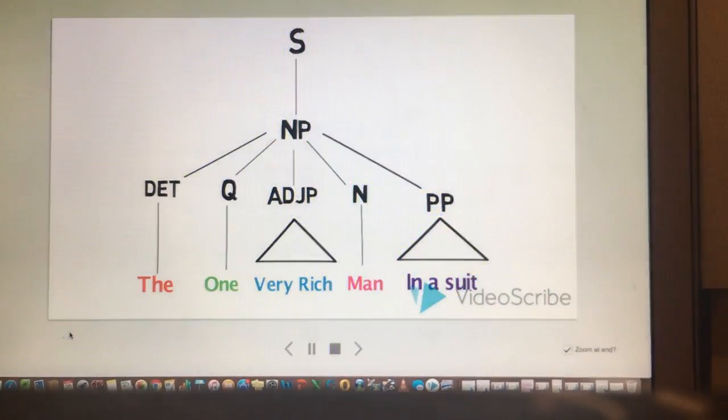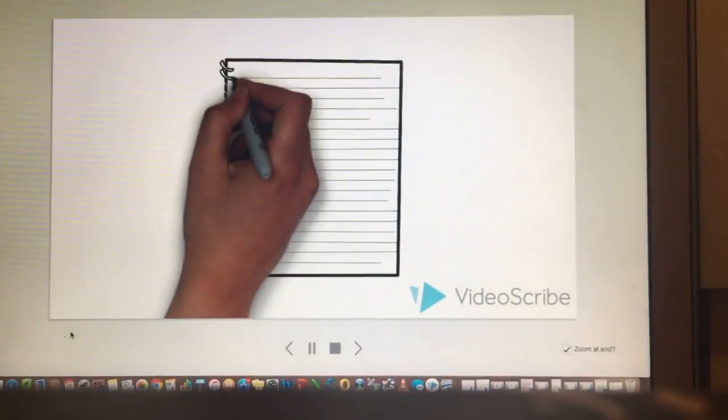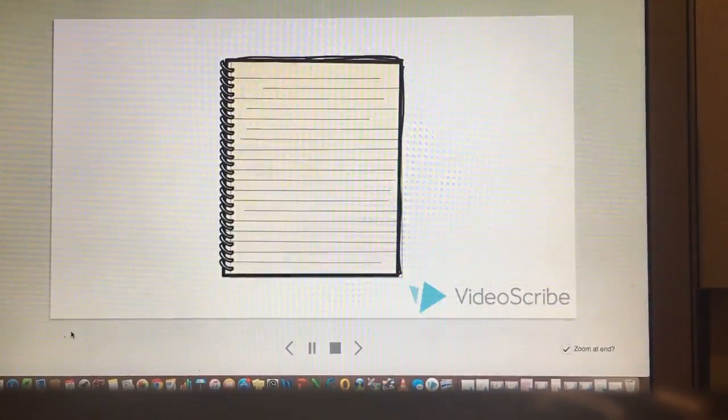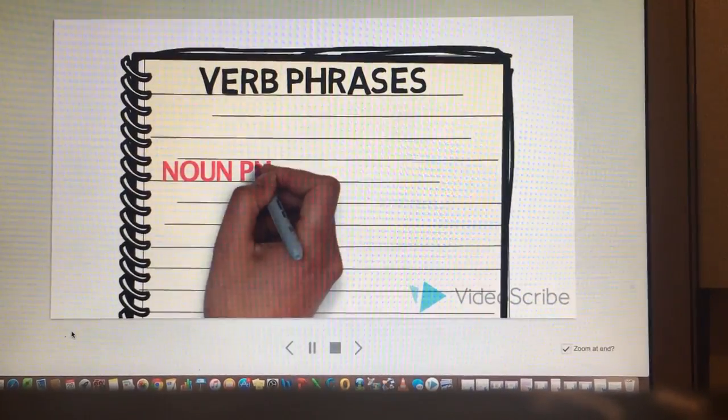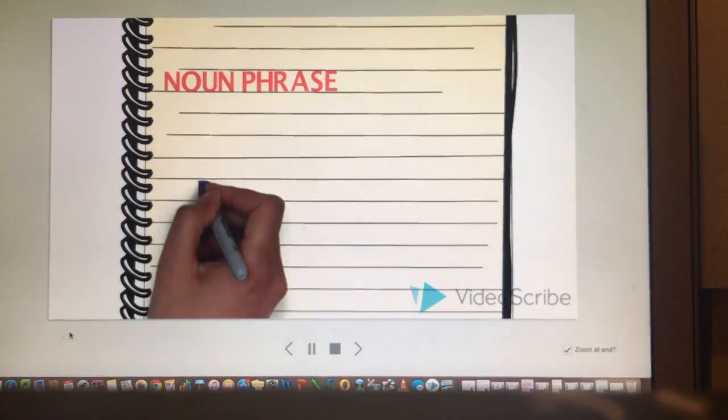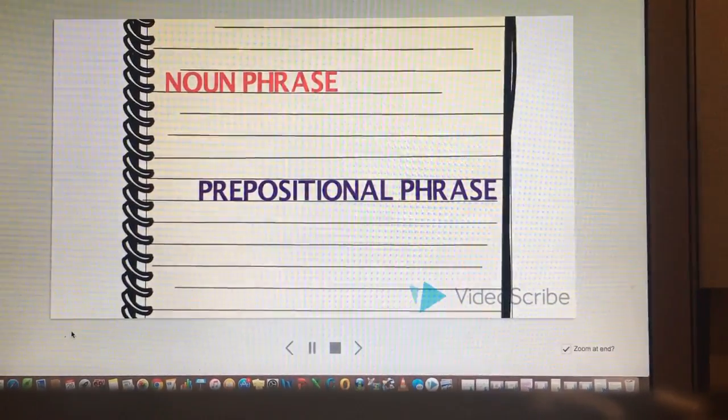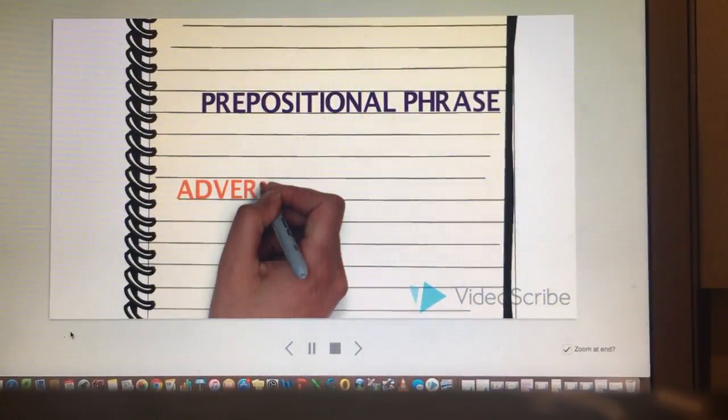A noun phrase only has to include a noun. It can but it doesn't have to include all of these other parts. Next we will be looking at verb phrases. A verb phrase must include a verb. It can also include a noun phrase, a prepositional phrase, and an adverb phrase.